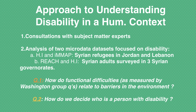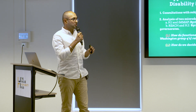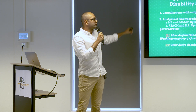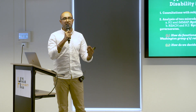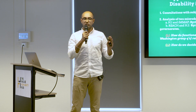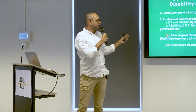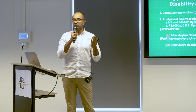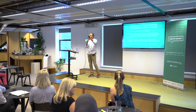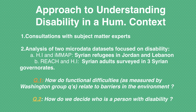My approach to understanding the problem was to first talk to a lot of people in the disability data community, to understand how they collect, analyze, and advocate for disability — to understand the problem space and the needs. I then analyzed two micro-data datasets focused on disability. For the sake of time, I'm only going to show you results from the first dataset, which was on Syrian refugees living in camps in Jordan and Lebanon. Of all the analysis I did, I'm going to share findings from two key topics: first, how functional difficulties — as measured by the Washington Group Questions — relate to barriers in the environment; and second, how do we decide who is a person with disability.